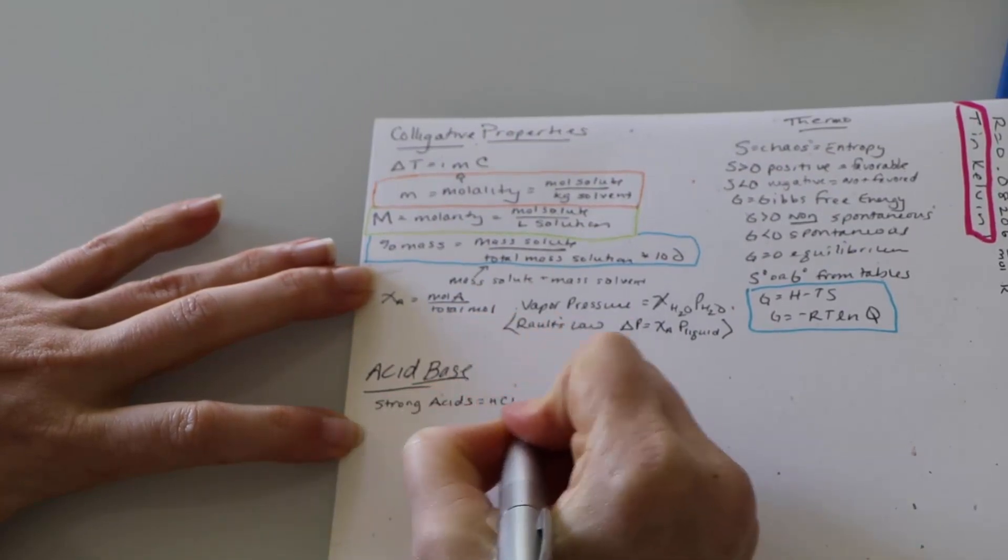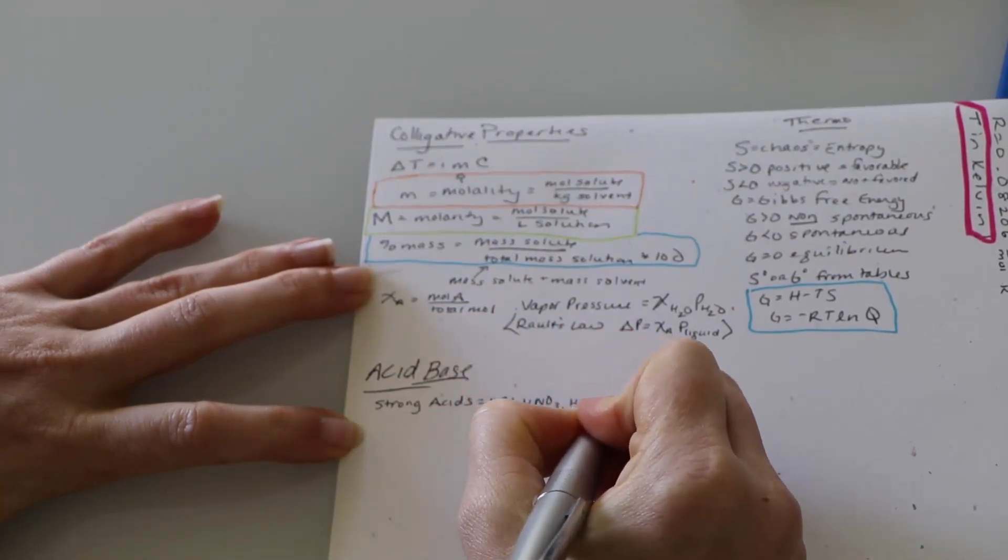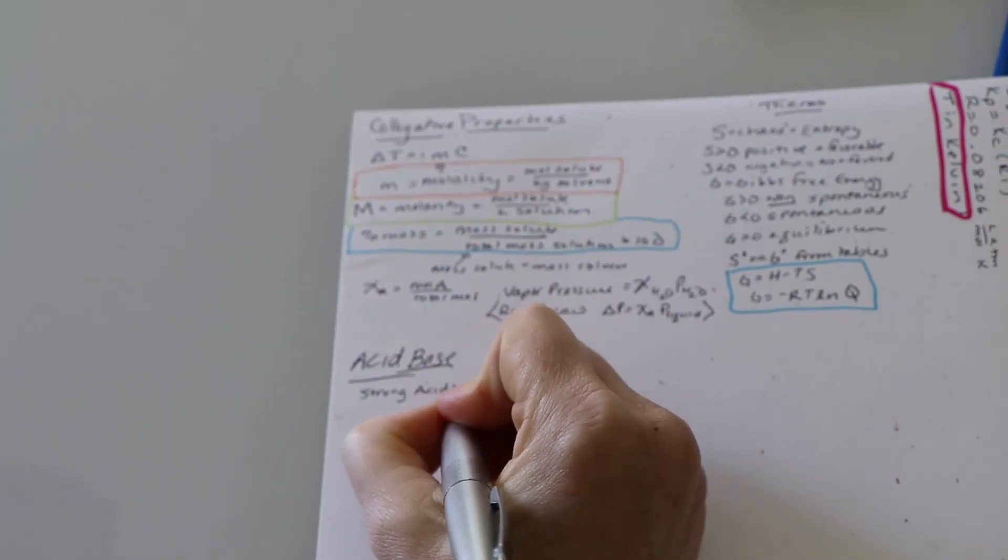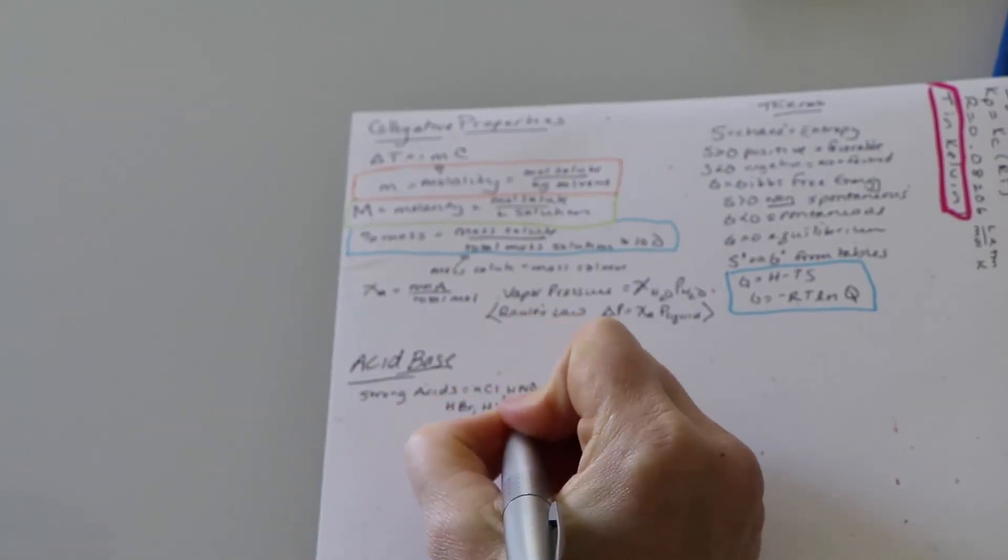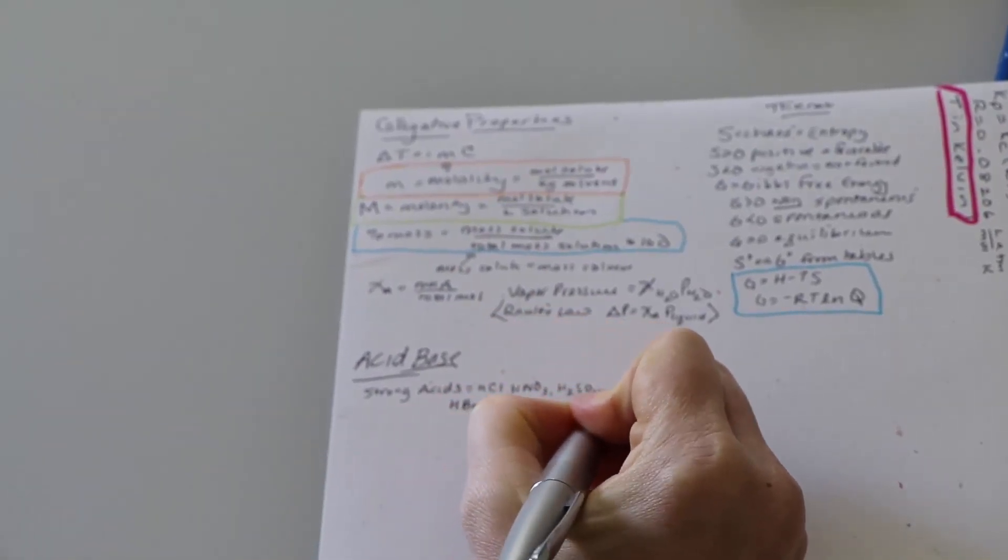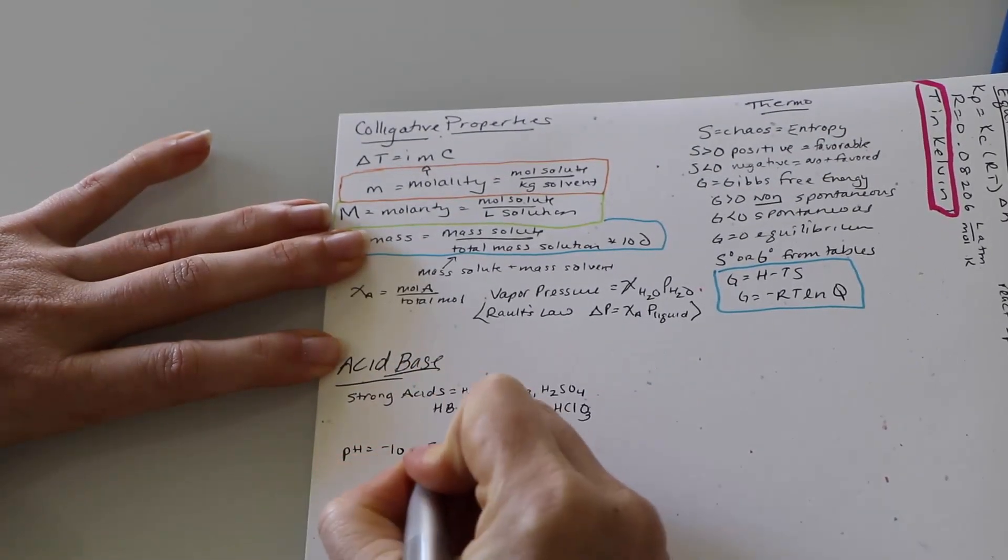Then I'm going to write down my strong acids. So for strong acids we have HCl, HNO3, H2SO4, HBr, HI. We should have HClO4 and HClO3.